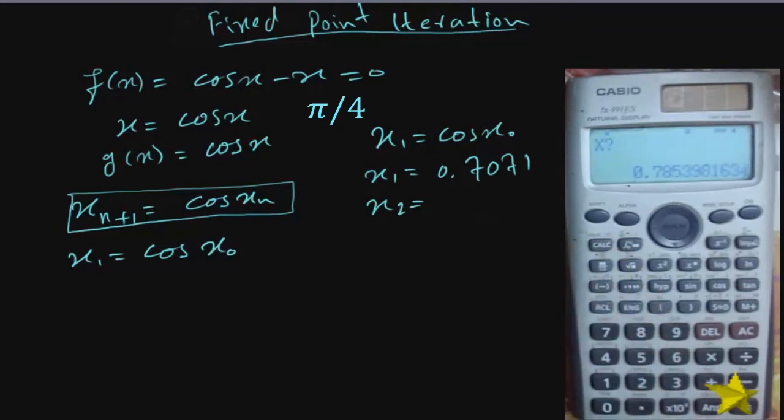It gives you the first iteration value which is 0.70710678. And for the next iteration all you have to do is press calc, then ans, and then equal. This will give you x2: 0.7602445971. And for the third iteration and so on, you just cycle calc, ans, equal, calc, ans, equal until you get very close to the actual answer.